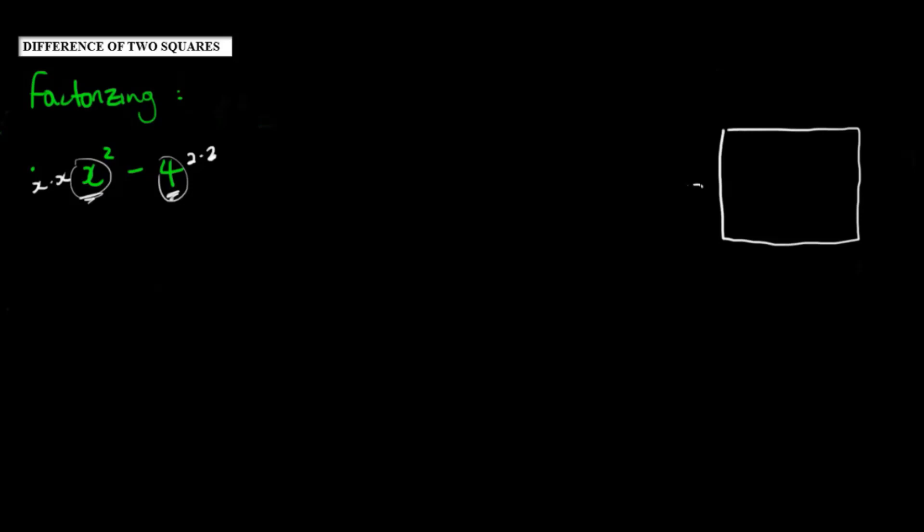So I have a square x squared which is this one and I'm taking away 4 from it. So I can think of 4 as a smaller 2 by 2 square.